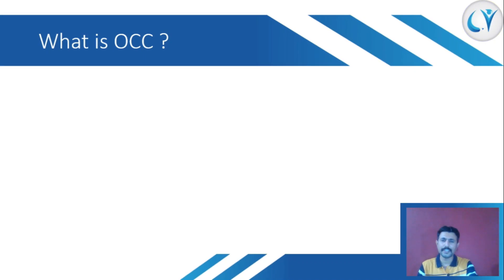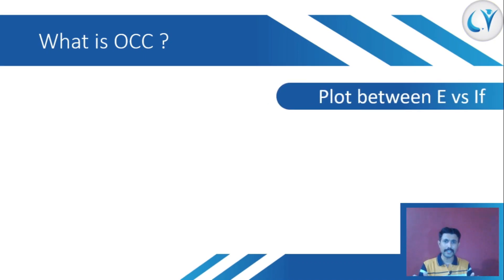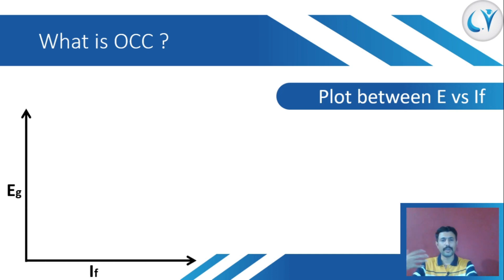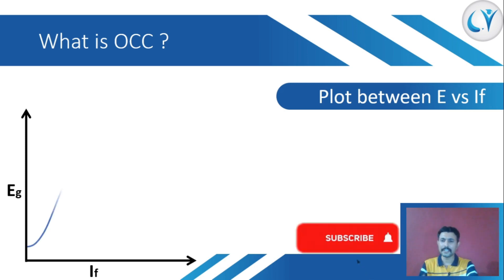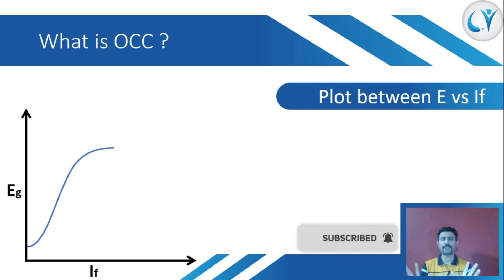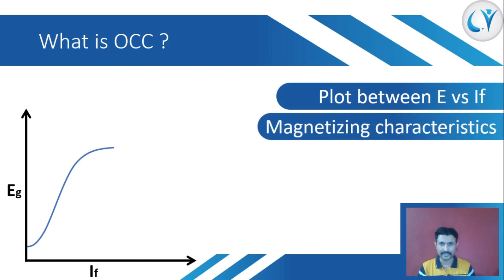The first question is: what is open circuit characteristics? Open circuit characteristics is nothing but the plot — the graph between induced voltage and the field current. On the vertical axis there is induced EMF and on the horizontal axis there is field current. The OCC is also known as the magnetizing characteristics, and why is it known as magnetizing characteristics? Because of the nature and the curvature of this graph — it looks like the BH curve or the magnetizing curve of any material.